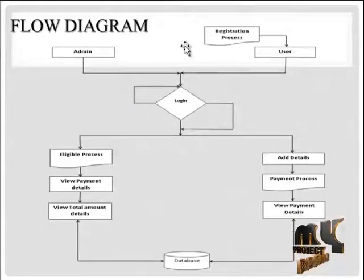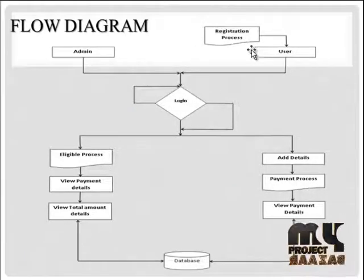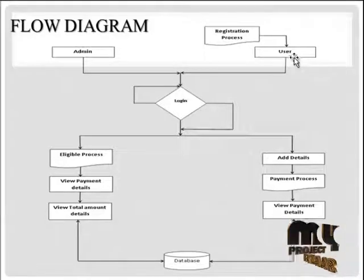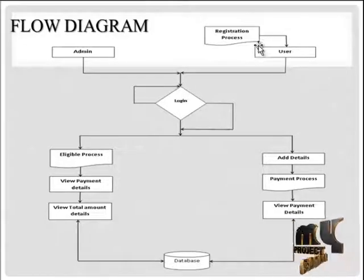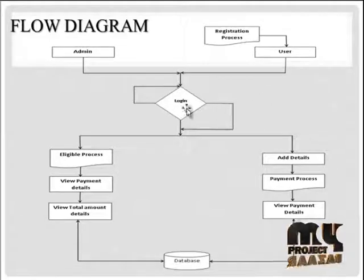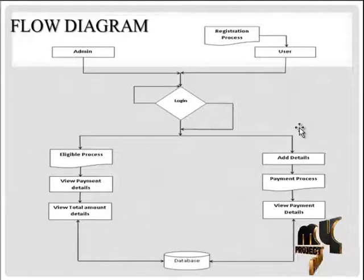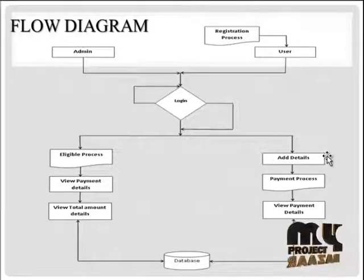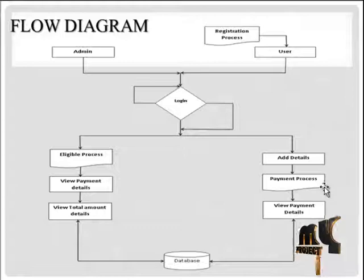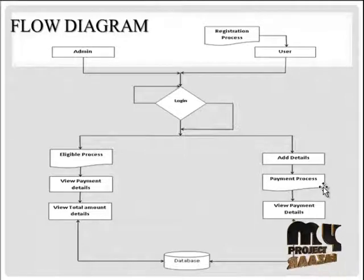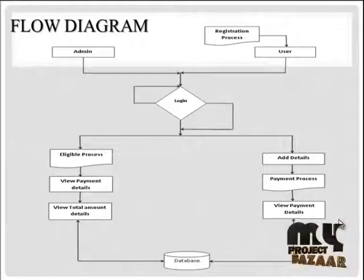This is our project flow diagram. First, the user completes the registration process and gets a user ID and password. Then the user logs into the project using the user ID and password and adds personal details and property details. Next is the payment process — the monthly due amount — and then the user reviews the payment details.